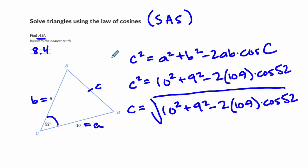So this is an example of side-angle-side. Notice the law of cosines can solve that scenario — the way the formula is set up, it can handle not knowing a second angle.